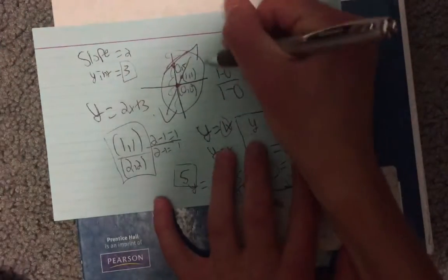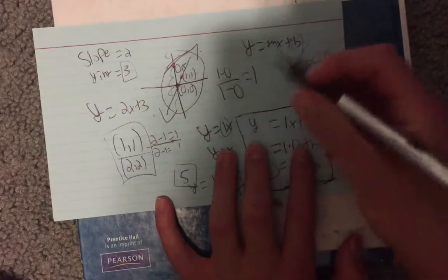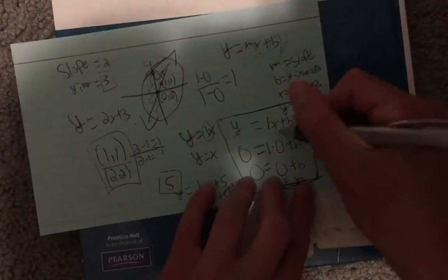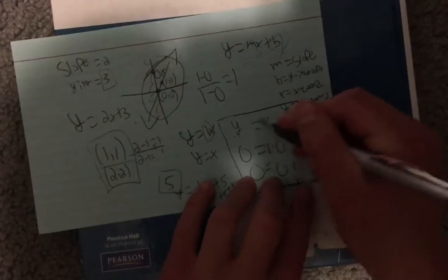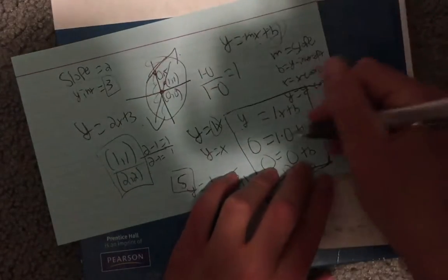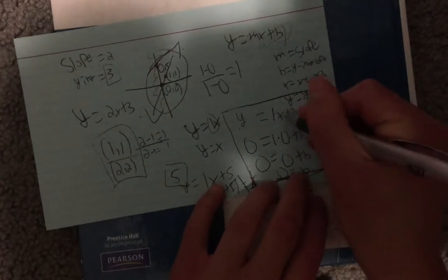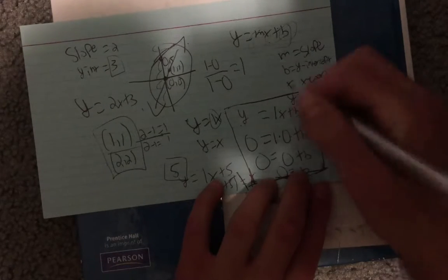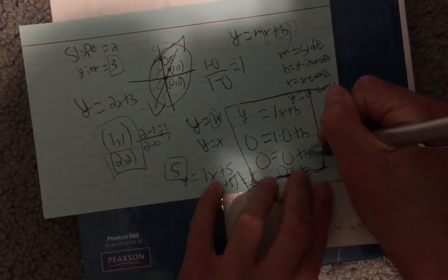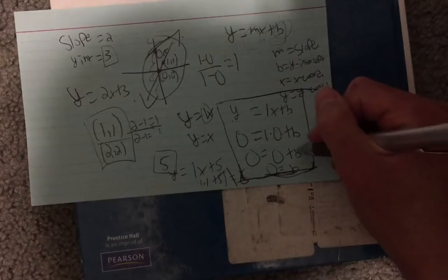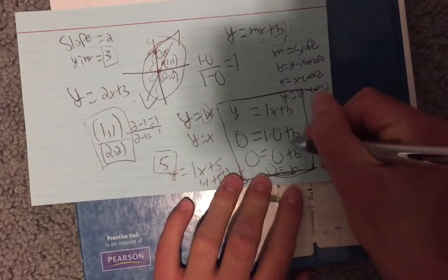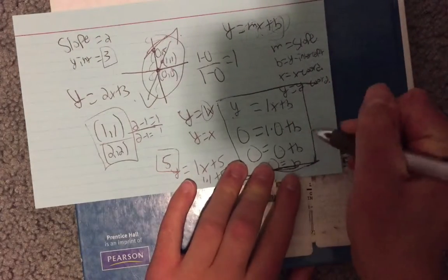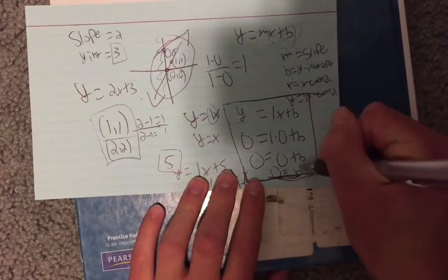Alright, so going back to this equation, or line. So we found that the slope is 1, so we plug that in for m, and we know 1 point on the graph, which is x and y. So let's plug in, as I did, 0 and 0. So you plug in 0 for x, 0 for y. 1 times 0 is 0. So 0 plus b equals 0. So what plus b equals 0? That would just be 0. 0 plus 0 equals 0. So b equals 0.